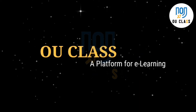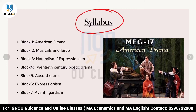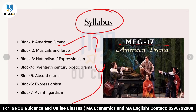First and foremost, we will go with the syllabus of MAG 17. As you can see here, there are seven blocks in total. Block one is American Drama — that is your introduction part. Block two is Musicals and Farce. Block three is Naturalism and Expressionism. Block four is 20th Century Poetic Drama. Block five is Absurd Drama. Block six is Expressionism. Block seven is Avant-Gardism.